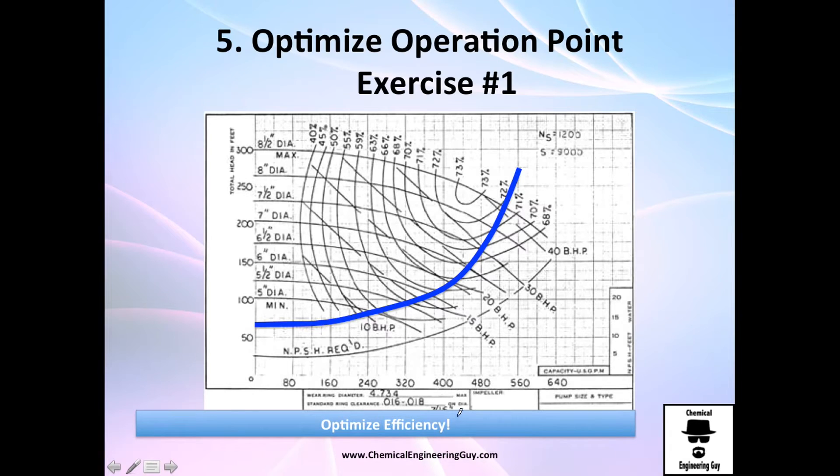So for example, exercise number one, they tell you optimize efficiency at all costs. Well then it's very easy, you have efficiency of 72, the only thing to do is increase it to 73 and work in this area.